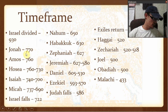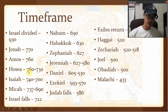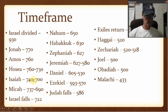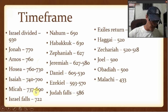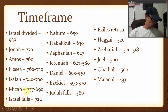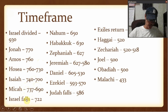Jonah was to Assyria. Amos was to Israel. Hosea was to Israel. They didn't listen. They didn't listen. Isaiah was to Judah and Israel. Micah was to Judah. Israel falls here, so obviously they're not going to get any more prophets there.